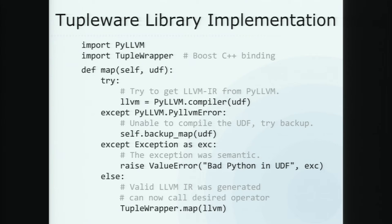One level down, if we look at the Tupleware library itself, the first thing you do is try to compile the UDF using PyLLVM. If that fails, we use a backup method which basically leverages the Python C API to produce an executable. The idea is we don't want the user to worry about whether their code is technically covered under PyLLVM or not — we just want them to feel like it's all covered. But most of the time we want to use our primary compiler. If the backup method fails, chances are you have bad Python in your UDF, and we raise an error.